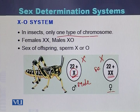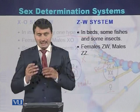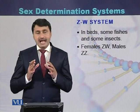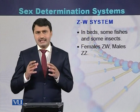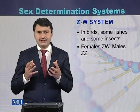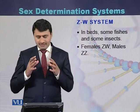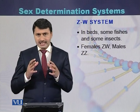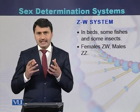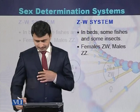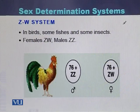A single X in the grasshopper represents the male, and two X chromosomes represent the female. The next system is called the ZW system, which is present in some birds, some fishes, and also in some insects.